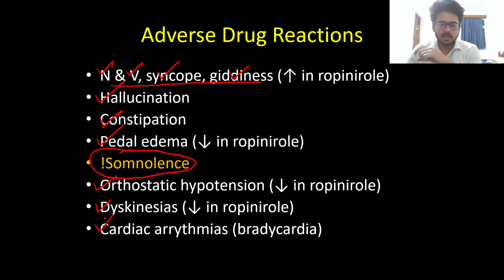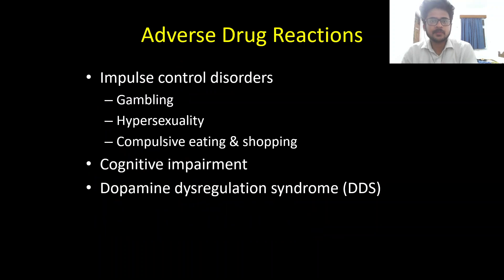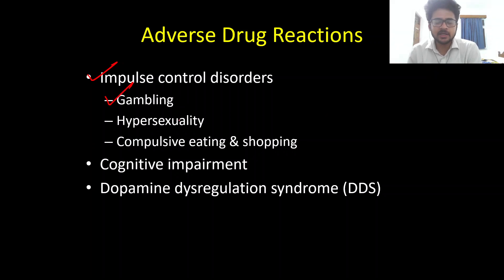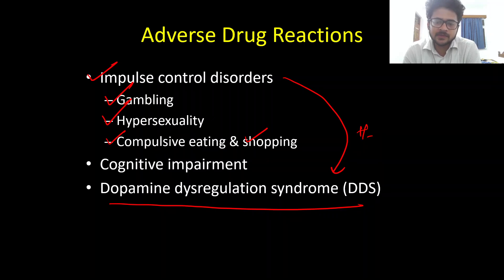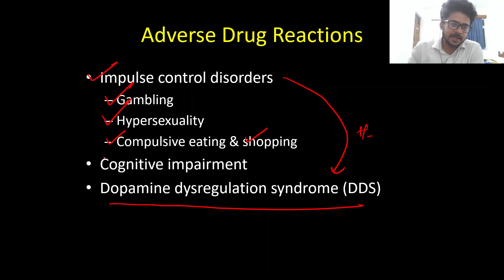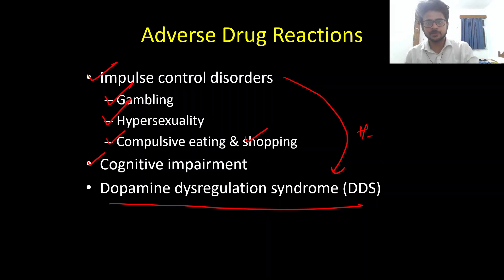Orthostatic hypotension and dyskinesia occur but are not as common as with levodopa. There is a small risk of cardiac arrhythmias, predominantly brady-arrhythmias. Chronic dopamine agonist use can cause impulse control disorders, which can take the form of gambling, high financial risk-taking behavior, hypersexuality, compulsive eating, and compulsive shopping. Dopamine dysregulation syndrome is also commonly seen — this is a form of addiction where the patient takes dopaminergic medications far more than needed to control motor symptoms.